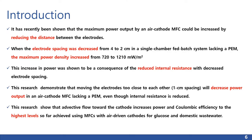Introduction: it has recently been shown that the maximum power output by an air cathode MFC could be increased by reducing the distance between the electrodes. When the electrode spacing was decreased from 4 to 2 centimeters in a single chamber fed batch system lacking a PM, the maximum power density increased from 720 to 1,210 milliwatts per square meter. This increase in power was shown to be a consequence of the reduced internal resistance with decreased electrode spacing.